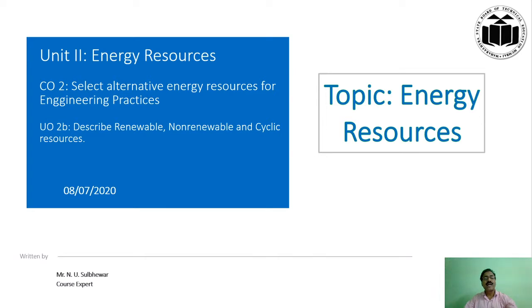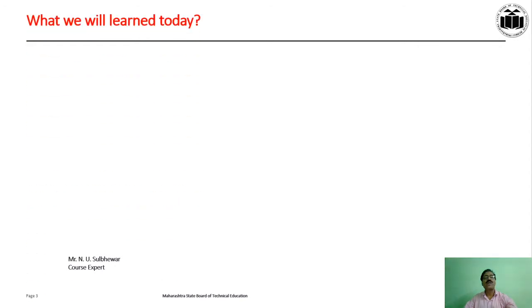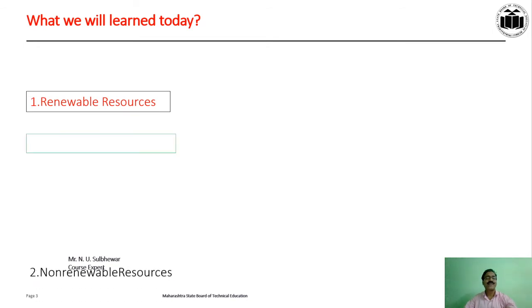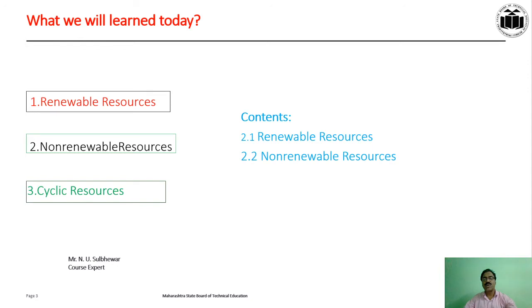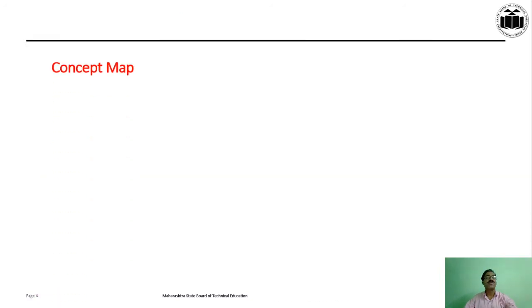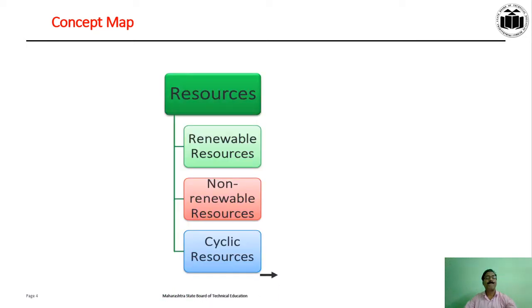Unit Outcome: Describe renewable, non-renewable and cyclic resources. What we will learn today are renewable resources, non-renewable resources and cyclic resources. In this course outcome, we will learn the concept map — resources that are renewable resources, non-renewable resources, and cyclic resources.